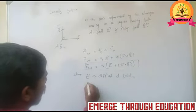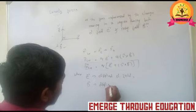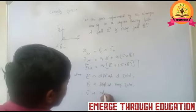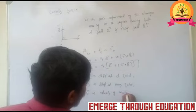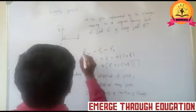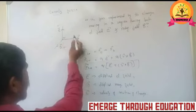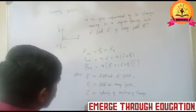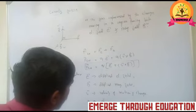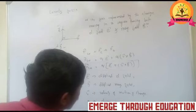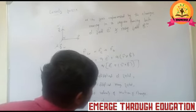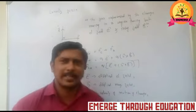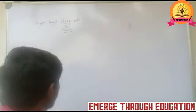In the expression for Lorentz force: E is the applied electric field, B is the applied magnetic field, V is the velocity of motion of the charge, and Q is the charge which is in motion. This is the complete expression for Lorentz force.